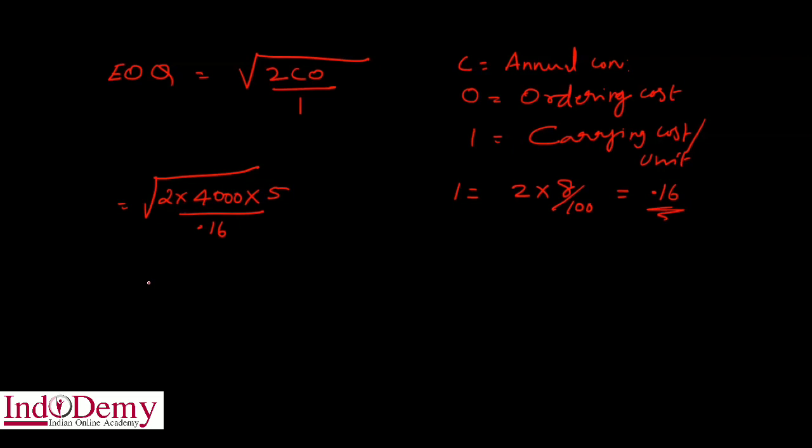Square root of 250,000 equals 500. So EOQ is 500 units or 500 kg. One order should be 500 kg.